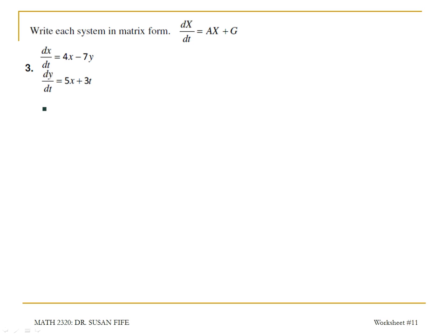In matrix form, this is going to give me x prime is equal to 4x, negative 7y. In the second row I have 5x and 0y. That's multiplied by my variables.